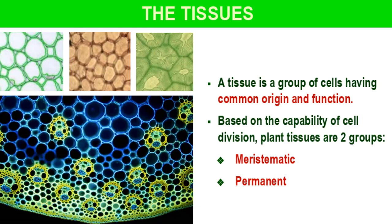Now, what is the tissue? A tissue is a group of cells having common origin and function. The cells which originate from a common place and have similar function combinedly make a tissue. Based on the capability of cell division, plant tissues are divided into two groups: meristematic tissues and permanent tissues.